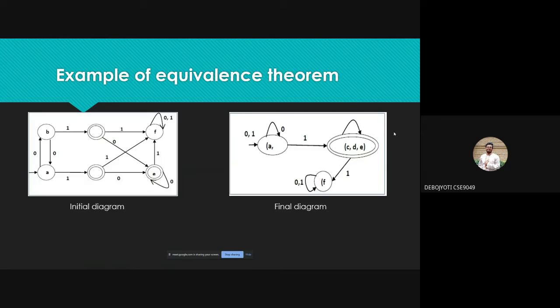In the final diagram we can see that it's a very complete diagram with only one final state and there is no redundant inputs and outputs. We are reducing the automata from its initial diagram to the final diagram.